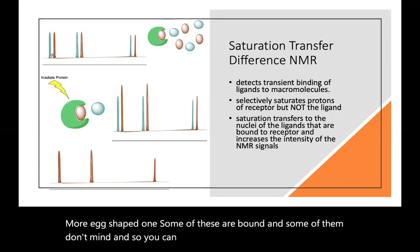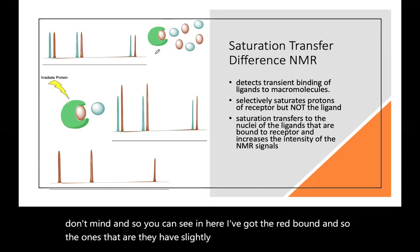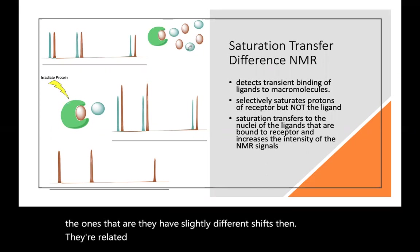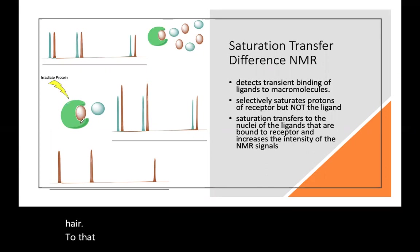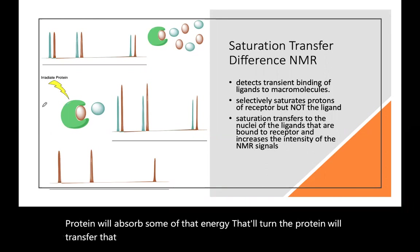Some of these are bound and some of them don't bind. And so you can see in here, I've got the red bound. And so the ones that are bound, they have slightly different shifts than their related compounds. So what we can see is if I irradiate the protein, but not the ligands, the peaks that are bound, the orange here, to that green protein will absorb some of that energy. The protein will transfer that energy over to the ligand that it's bound to, but not to the others.